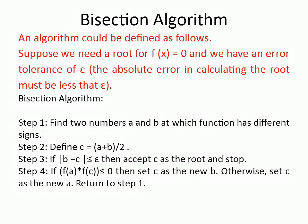If the accuracy condition is not satisfied, for the next iteration we replace either a or b with the value of c. The deciding parameter is f(c). If f(c) is positive, replace the positive value — if f(a) is positive, replace a with c; if f(b) is positive, replace b with c. In this way you continue iterating further to find the answer.